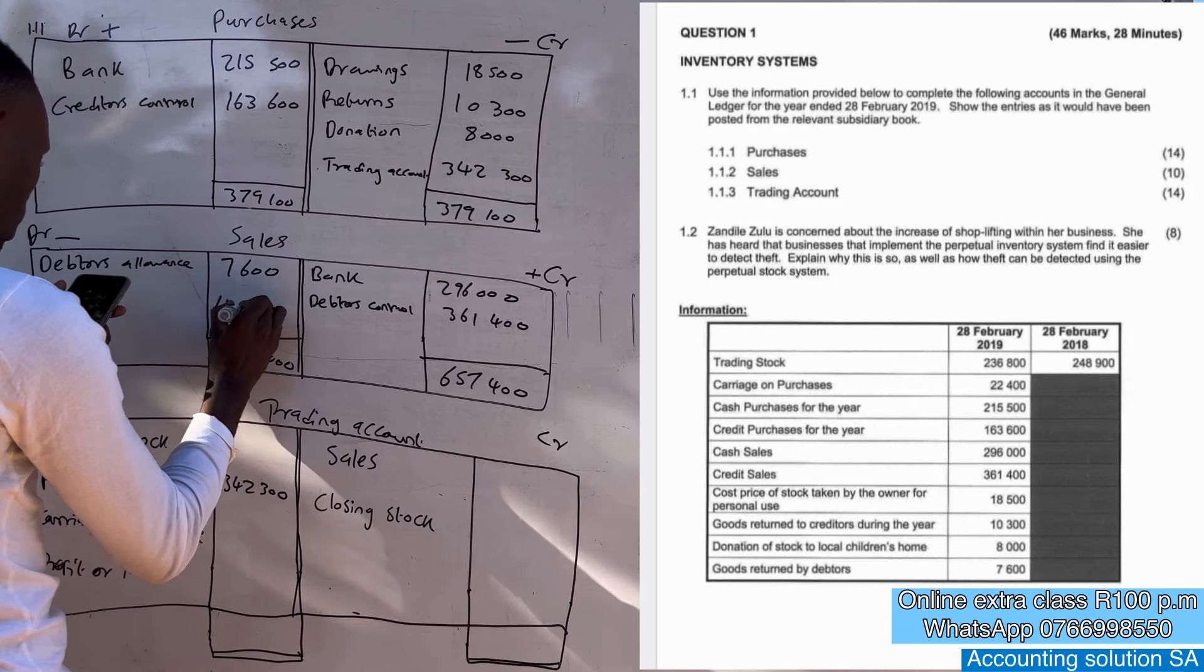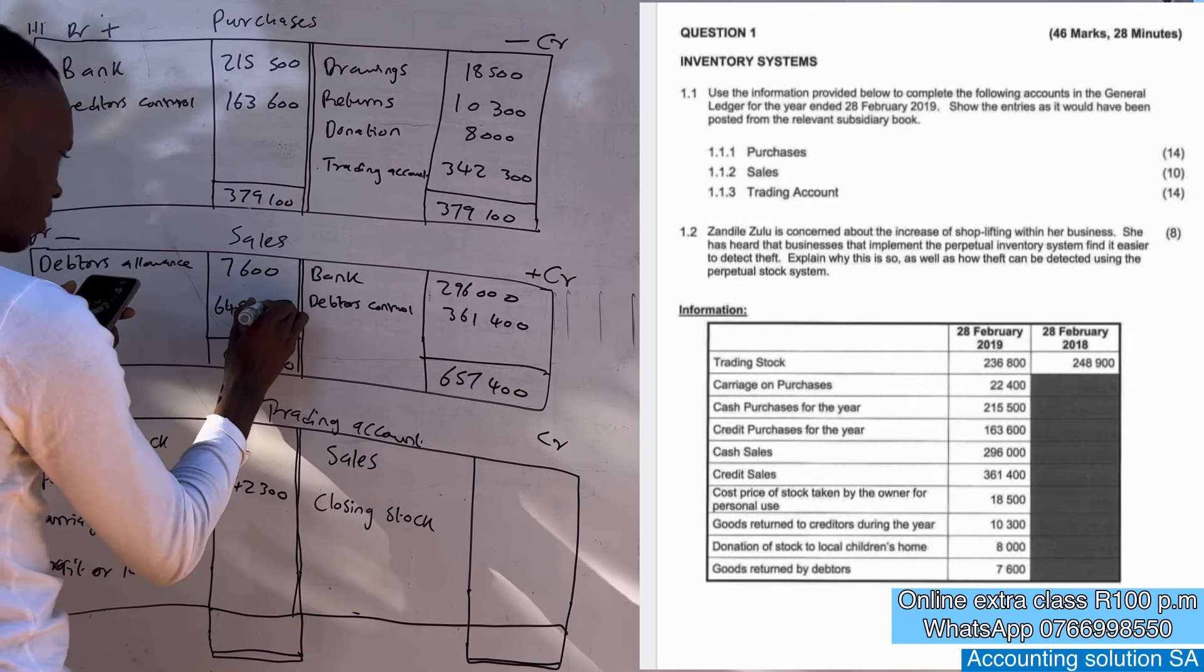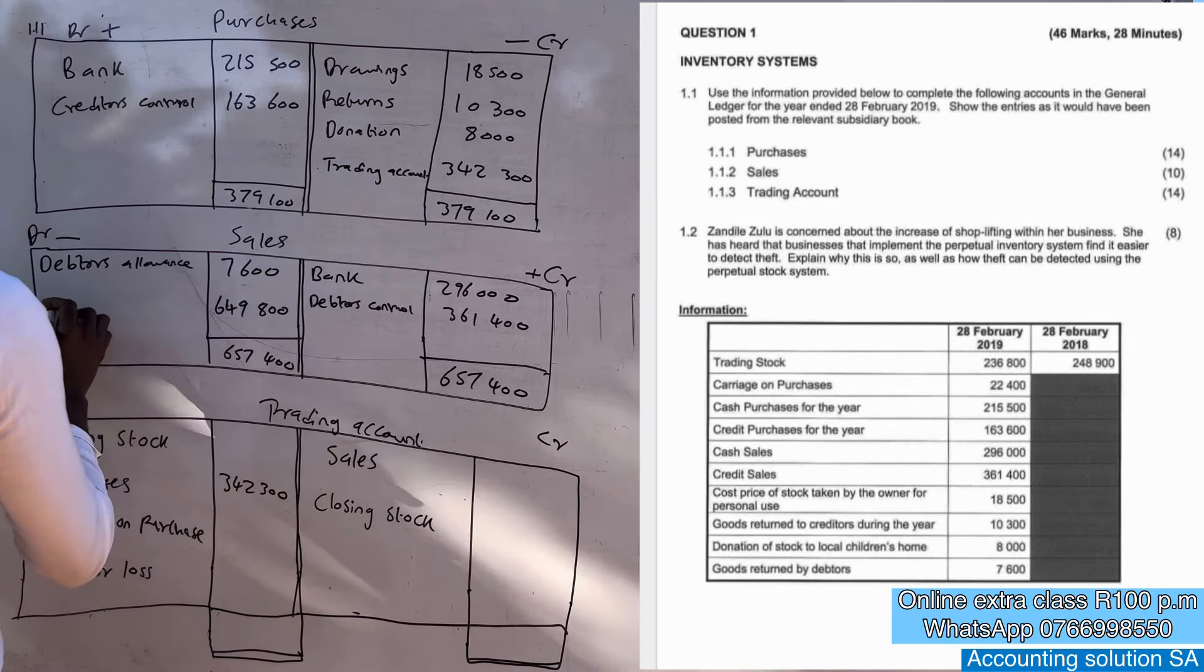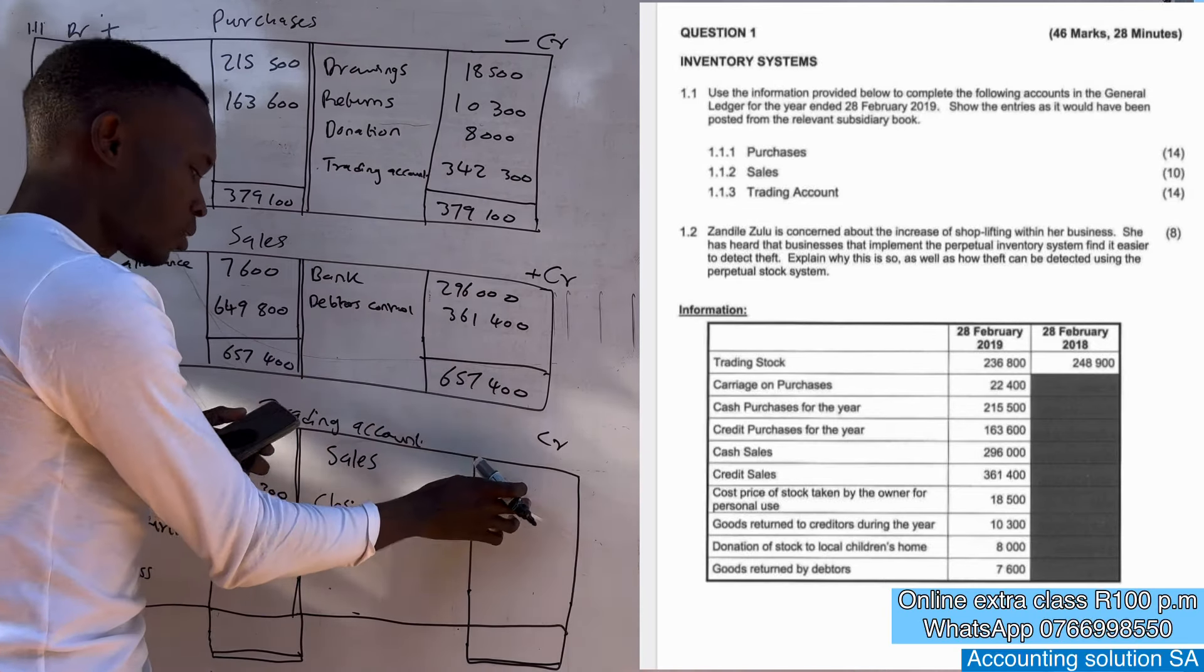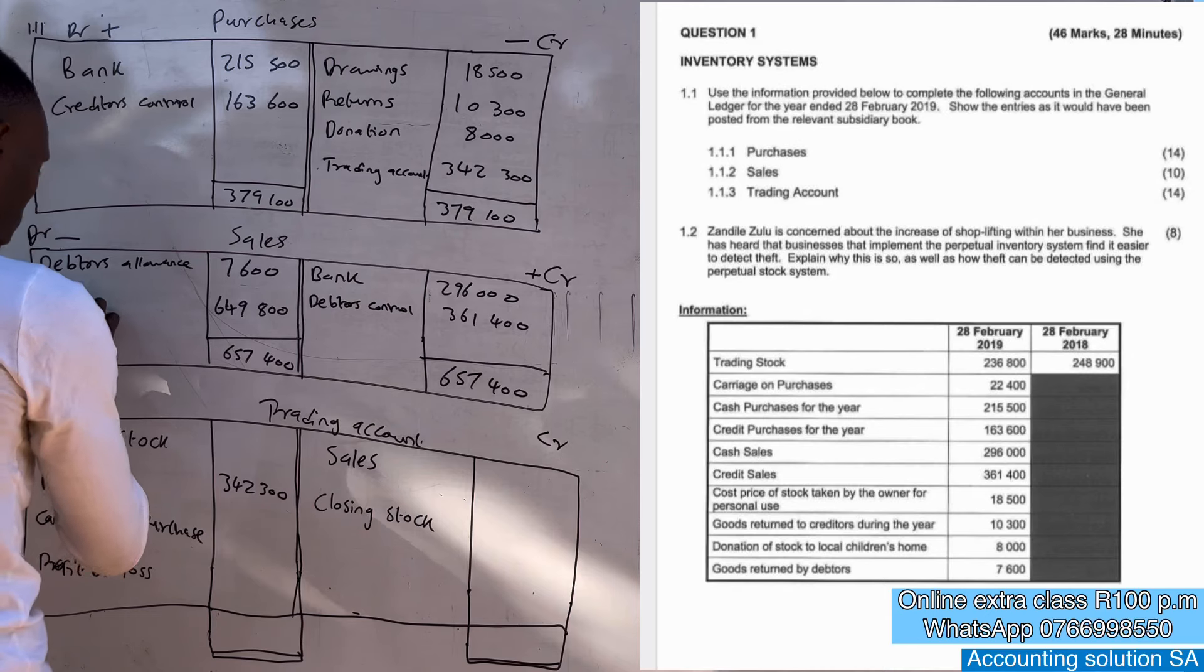657,400 and we subtract this and we're going to get 649,800. Because we are transferring this one to trading account we must write the word trading account, 649,800 just like that.